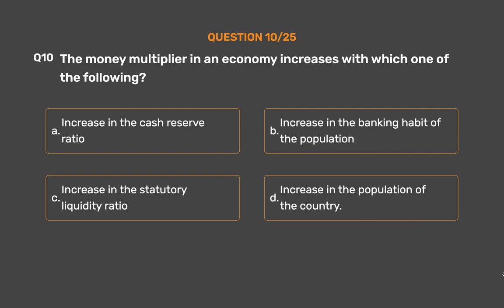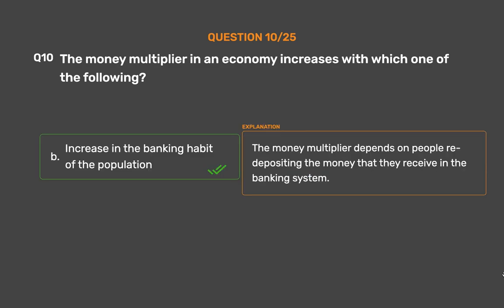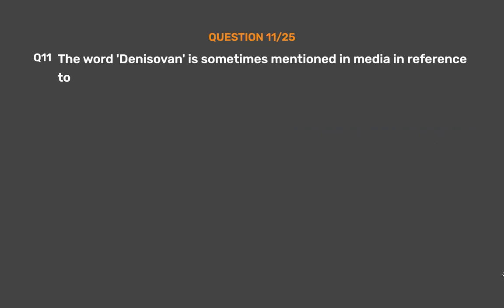The correct answer is Option B: Increase in the Banking Habit of the Population. The money multiplier depends on people redepositing the money that they receive in the banking system.